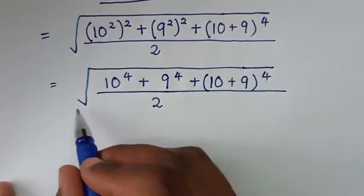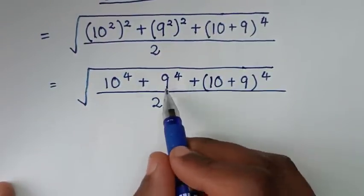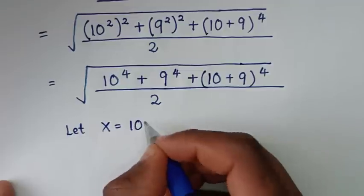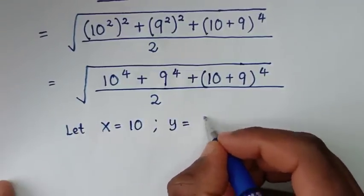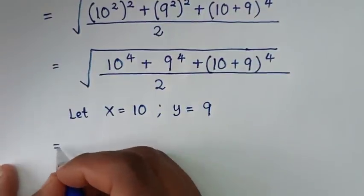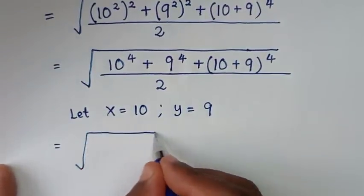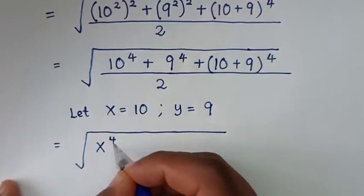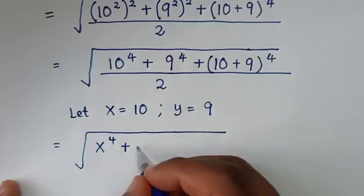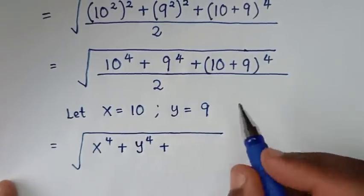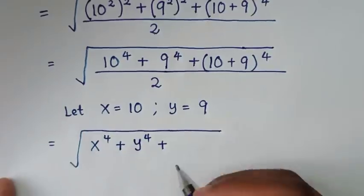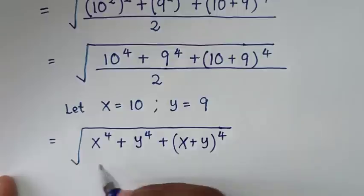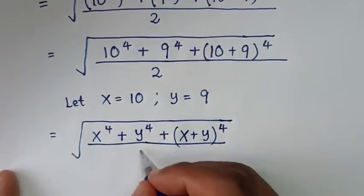In the next step, from here you can see that 10 is common and also 9 is common, so we let x equal to 10 and y equal to 9. Then the expression becomes the square root of x to the power 4 plus y to the power 4 plus (x + y) to the power 4, over 2.